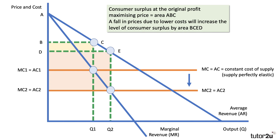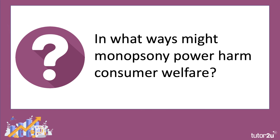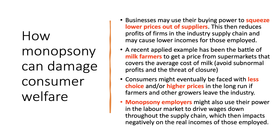Of course, you'll want to evaluate those points and challenge them. In what ways might monopsony power harm consumer welfare? First, let's think about the wider supply chain. Businesses may use their monopsony power — their buying power — to squeeze lower prices out of their suppliers, which will reduce the profits of firms further down the supply chain. Indeed, it may well cause lower wages and lower incomes for those people employed in supply chain businesses.